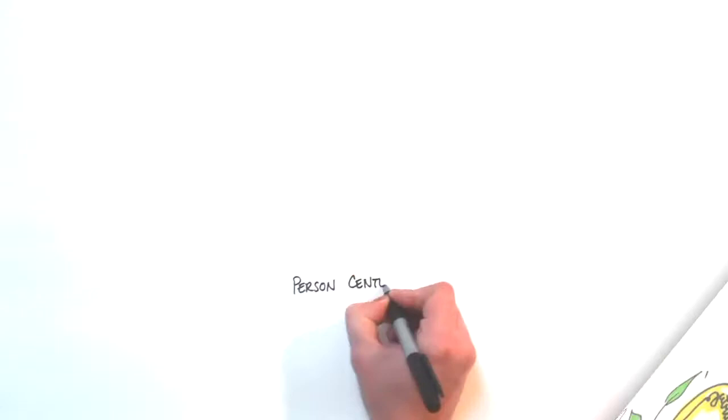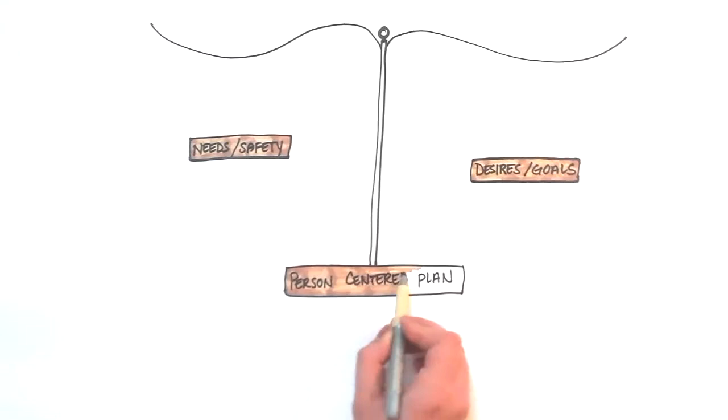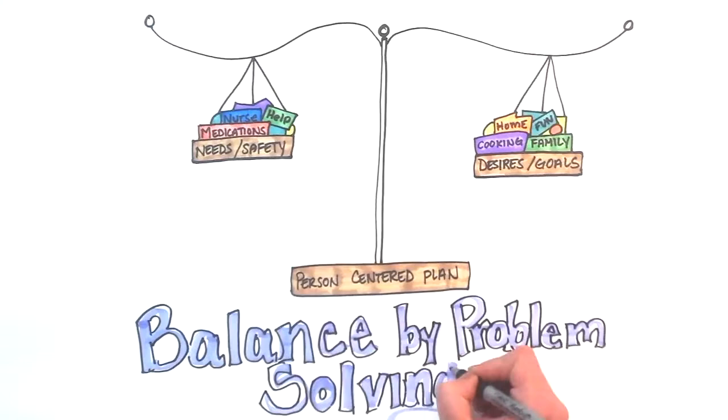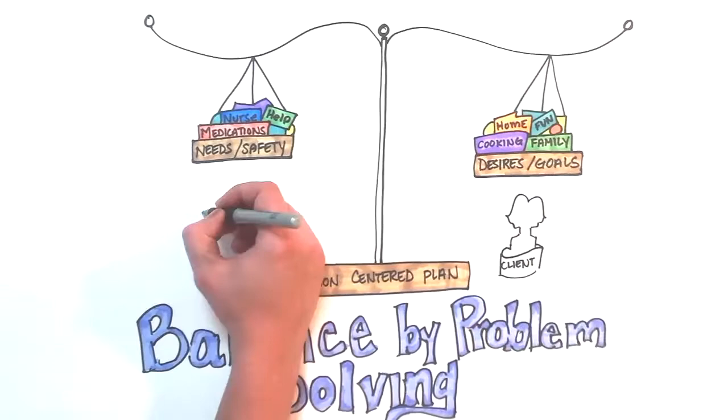One of the challenging aspects to this shift in culture comes when many professionals feel that a person-centered approach means that the individual gets all of their needs met, and they fear they are setting the person up for disappointment or failure. A person-centered approach helps us to better understand the individual's strengths, needs, goals, and values to help design a support plan that responds to the individual's desires.